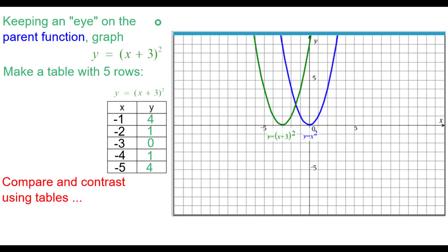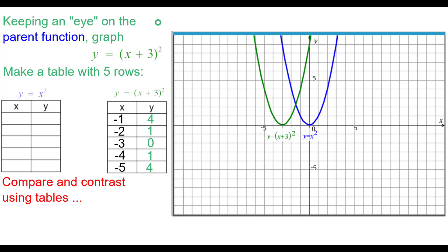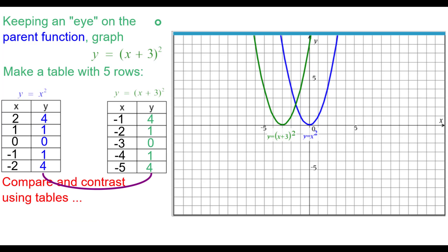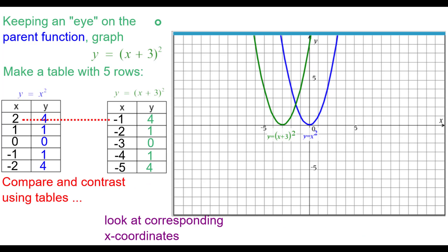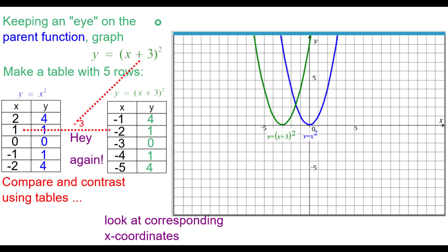Now let's compare and contrast using tables. We look at a y equals x squared table using these five values. Notice that the y coordinates are identical. Now look at the corresponding x coordinates — from 2 to negative 1, you subtract 3. Compare that to the equation — that's a plus 3. From 1 to negative 2, you also subtract 3. When we subtracted before we had to add; now when we add in the equation, we have to subtract. It's reversed, inside the function.